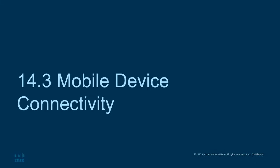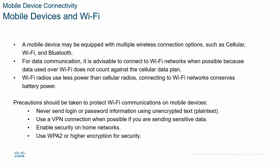We can connect with our mobile devices. For example, we can connect with Wi-Fi or with cellular data. We can connect with mobile devices and Wi-Fi. However, we should not pass sensitive information over public Wi-Fi. We have to use encryption security for that.